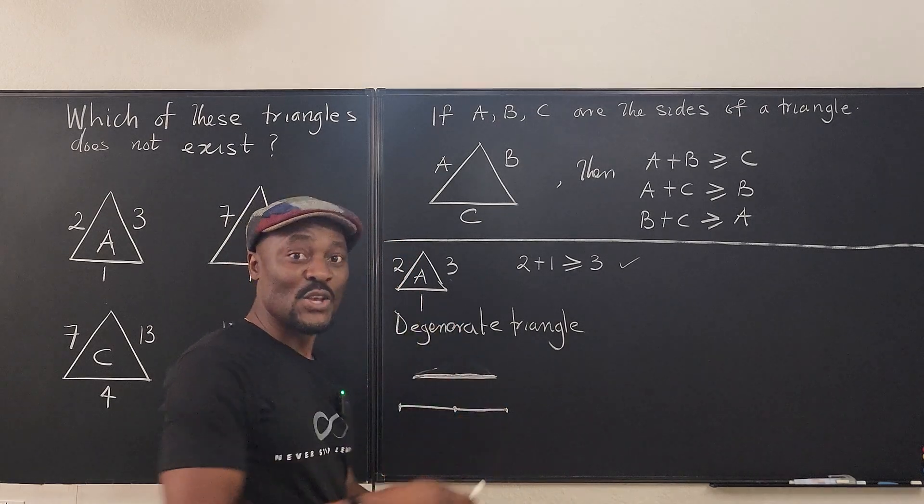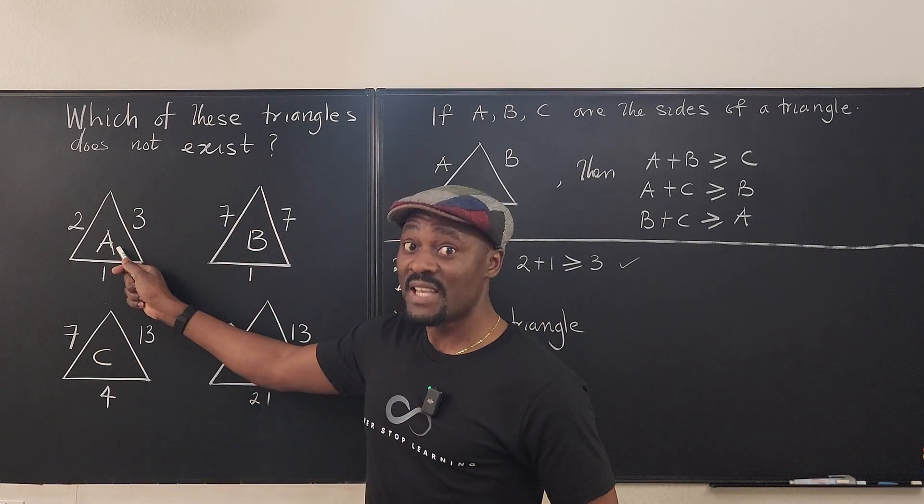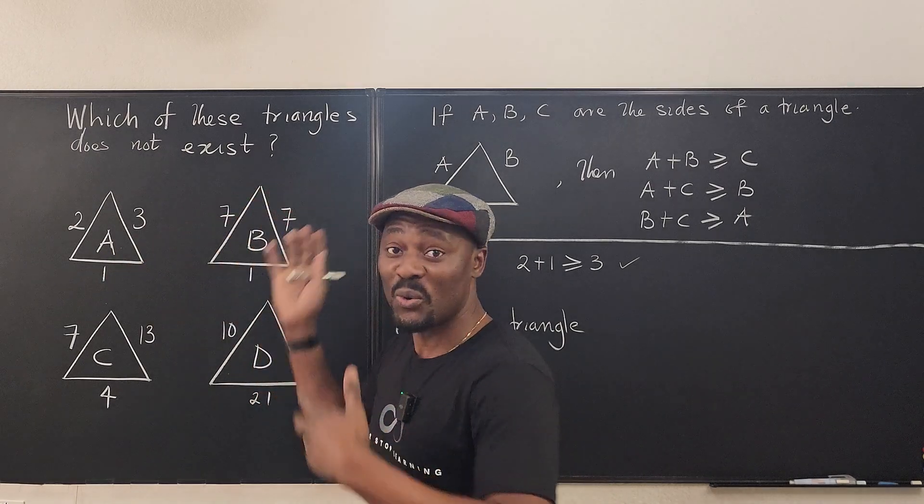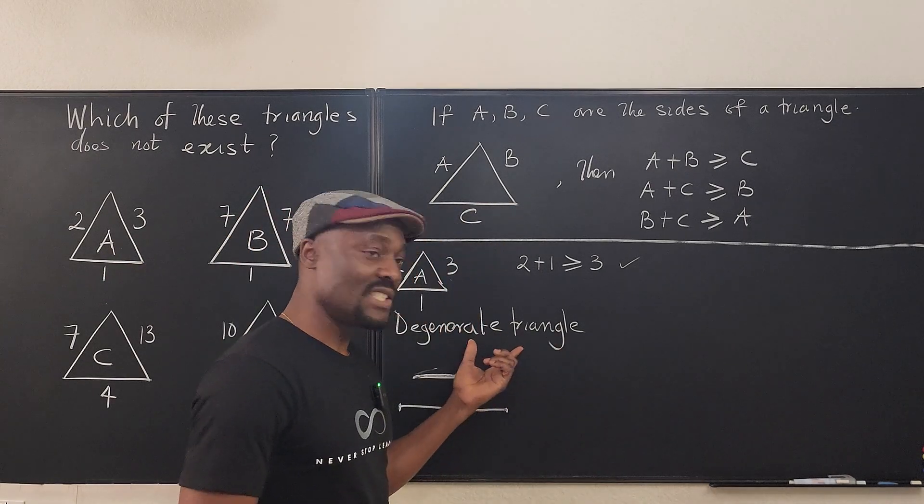And it is a triangle because it still satisfies the triangle inequality condition. So do not discard this. So this actually exists, which I think was the controversial one in the poll that I gave. So this is degenerate.